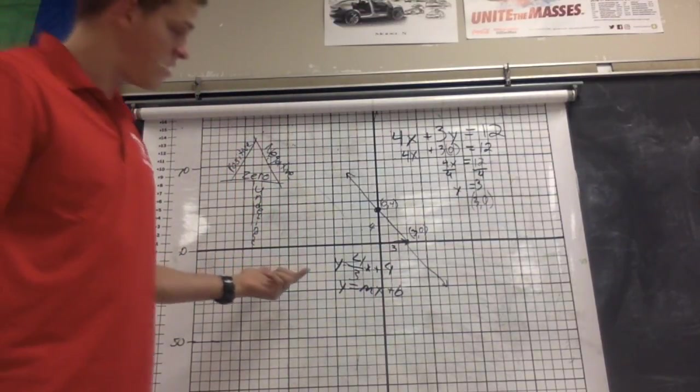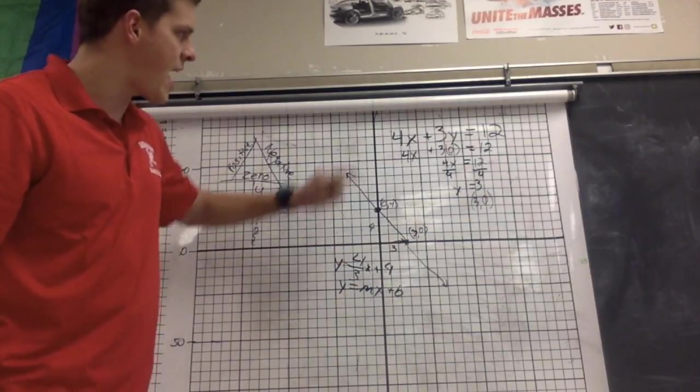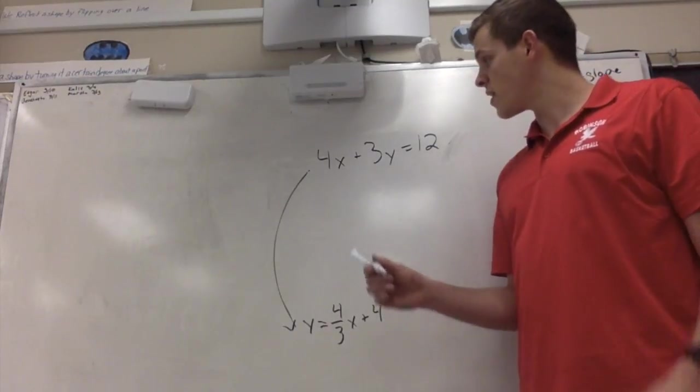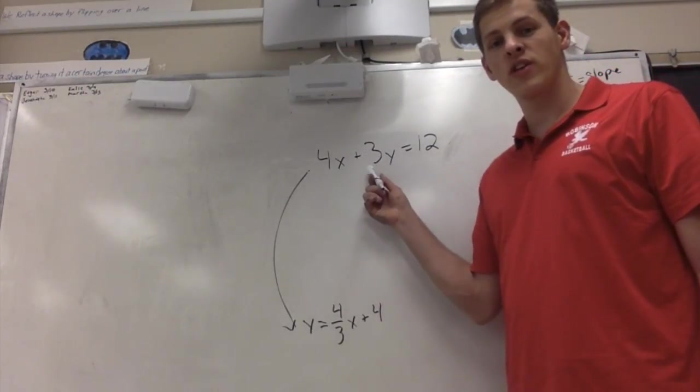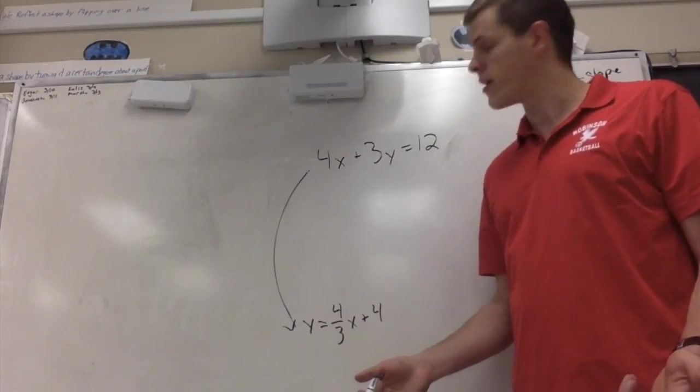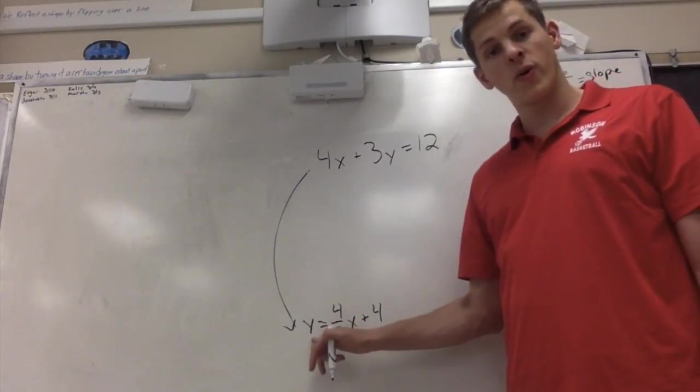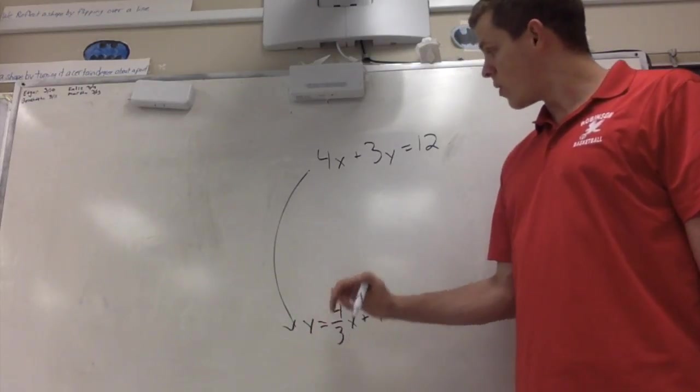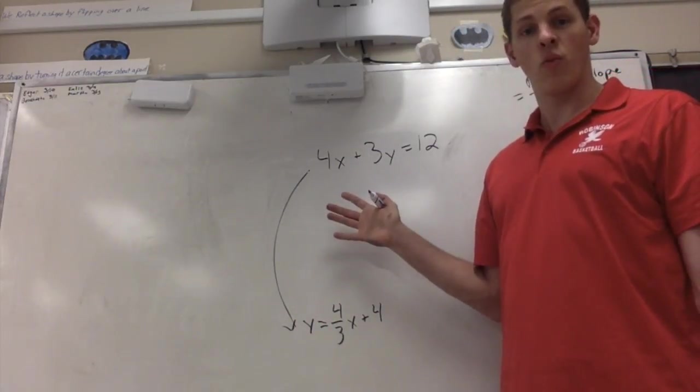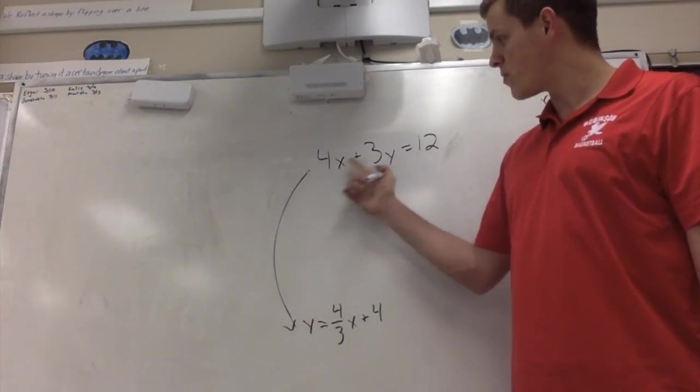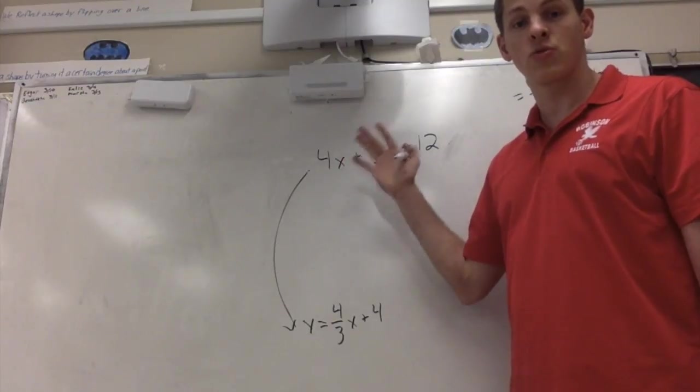So last thing we want to check is can I actually convert that into that somehow algebraically? So the question again that we're asking is, can we turn this equation here into this equation just manipulating some things with algebra? First up, we're going to get it into this equation. What we want to notice, we want to get y on its own, in this case on the left side. So the things kind of crowding y's space is the 3 and the 4x.